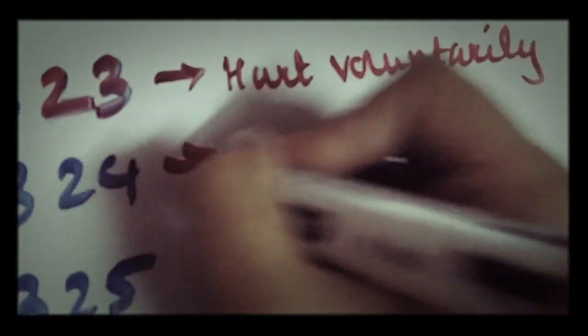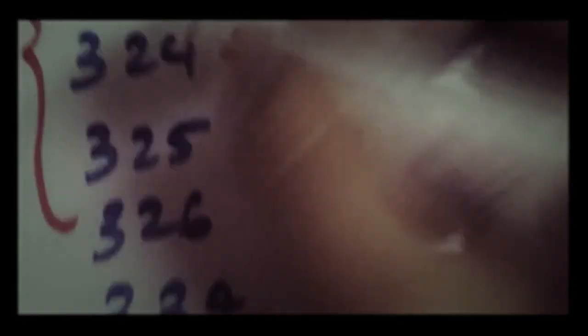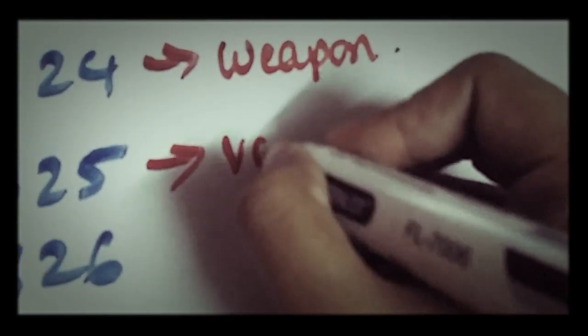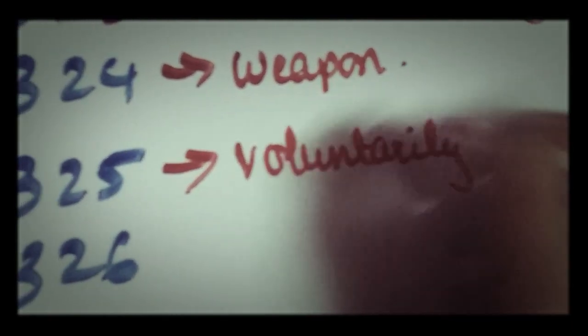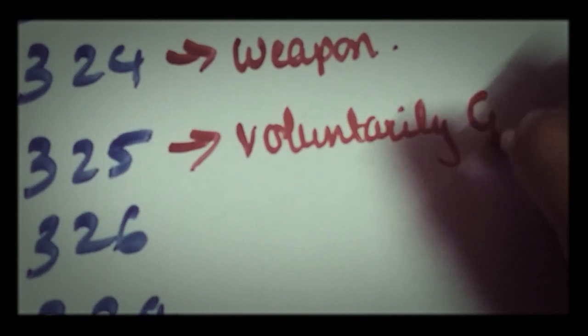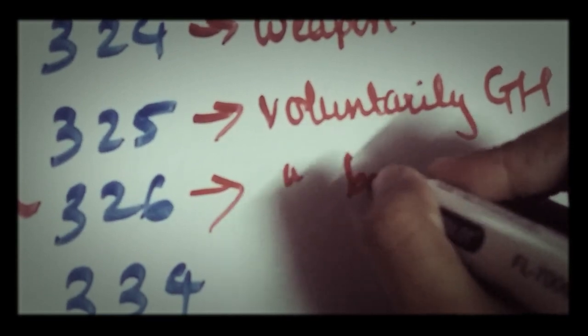And that's the punishment, I think. And then it is followed by voluntarily hurting someone with a weapon, and then it's just consecutive. So after H we have the G for grievous hurt. Voluntarily causing grievous hurt would be 325, and 326 would be voluntarily causing grievous hurt by a weapon.